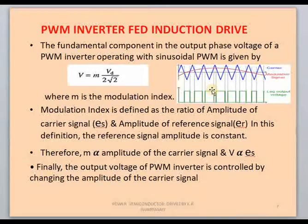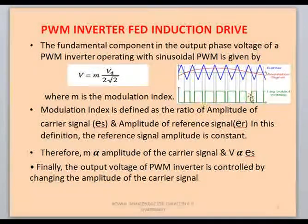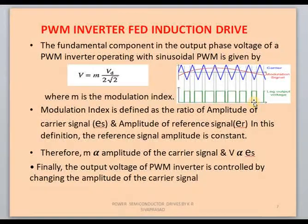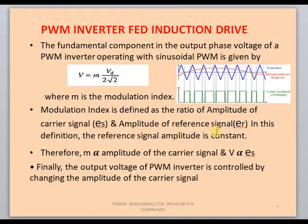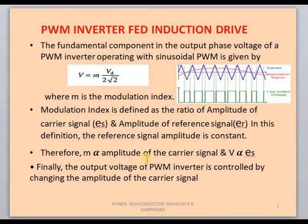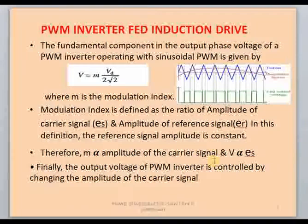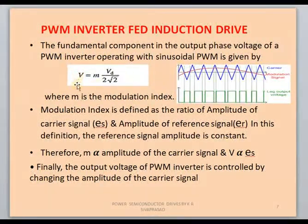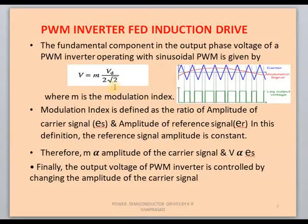This is the PWM inverter-fed induction motor drive. In pulse width modulation, pulses are generated by comparing two signals: a carrier signal and a modulating/reference signal. The carrier signal is a triangular wave and the modulating signal is a sine wave. By comparing these two signals we generate pulses to operate the switches, which eliminates harmonics — that's why PWM inverters are better. The modulation index is the ratio of the reference signal amplitude to the carrier signal amplitude. The fundamental output phase voltage is V = M × V_d / (2√2).